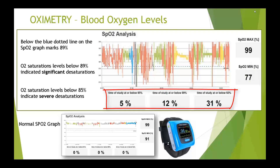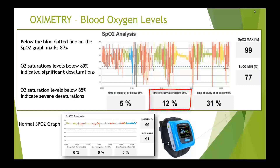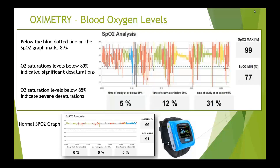The first bin is time of study at or below 92% — in this case 31%, indicating the patient is spending quite a bit of time at the lower end of the normal range. The middle bin, time of study at or below 89%, is at 12%. This number should be a low single digit under normal circumstances, and at 12% it's highly indicative of sleep apnea. The third bin, time of study at or below 85%, should always be zero. Any value here is a red flag and almost always indicates the patient should be sent to a sleep lab or seen by a physician.